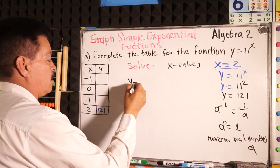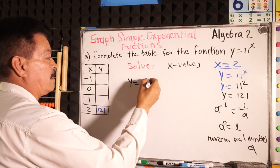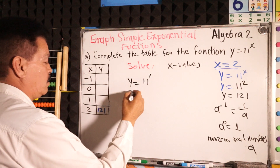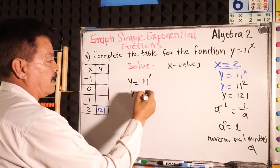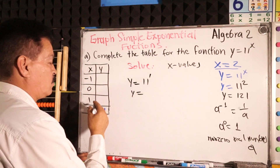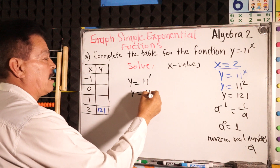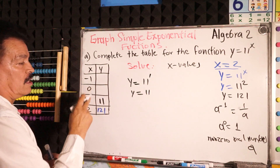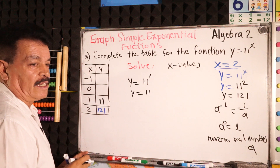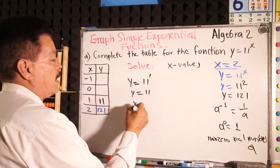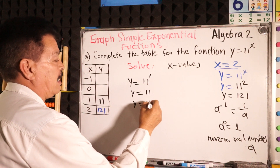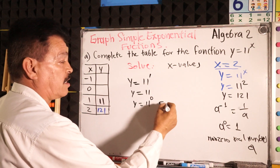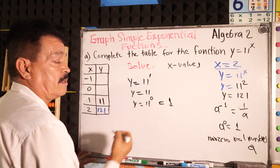For x equals 1: y equals 11 to the 1 power, which is the same value, so it equals 11. For x equals 0: y equals 11 to the 0 power. Remember this rule — when the exponent is 0, this equals 1.